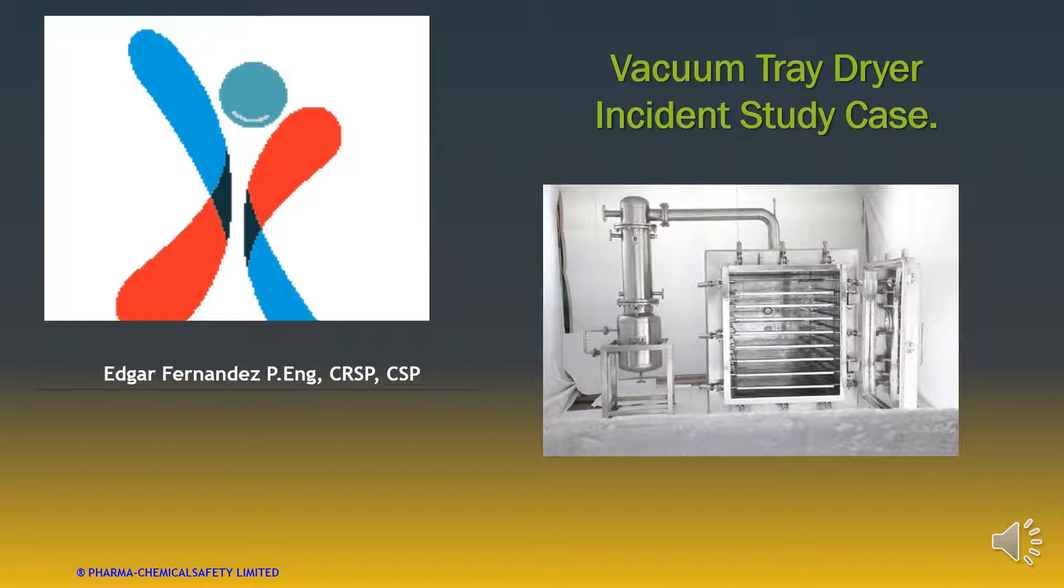At the time of the incident, the operator put 11 bags in the vacuum tray dryer room. The operator put one of the bags on the stainless steel table that has four rubber wheels on the bottom. He opened the bag, grabbed the scoop to transfer the material to the trays of the dryer. He performed this step four times, and suddenly, the flash fire occurred.